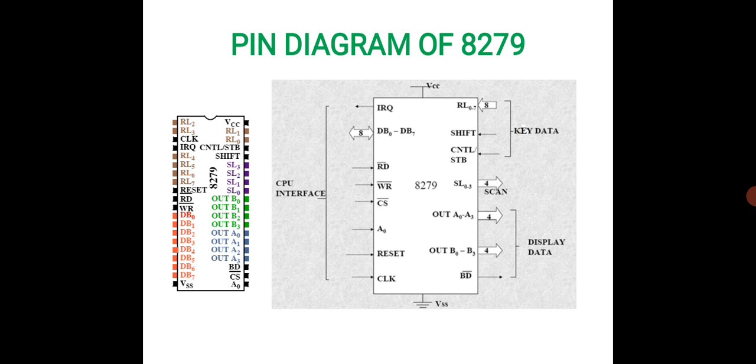This shows the pin diagram of 8279. These pins are divided into four blocks: keyboard section, display section, scan section, and CPU interface section. All the keys will be in the keyboard section, all the display lines in the display section, all the signals for interfacing 8279 with the CPU or microprocessor will be in the CPU interface section, and we have four scanning lines.